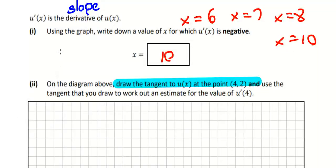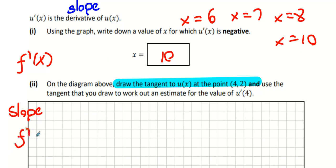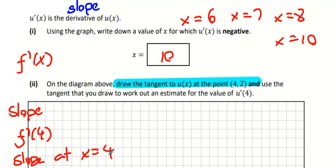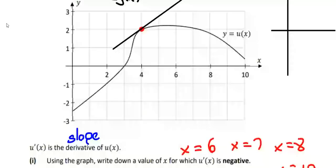What does f-dash mean? It means the first derivative — would you also agree it means the slope, because the slope is the first derivative? What does f-dash of four mean? The first derivative when the x-value is four, or the slope at x equals four. What does u-dash of four mean? Exactly the same thing — the only difference is they're using u instead of f.